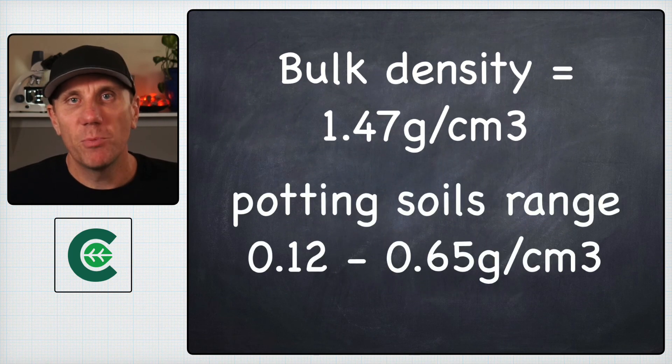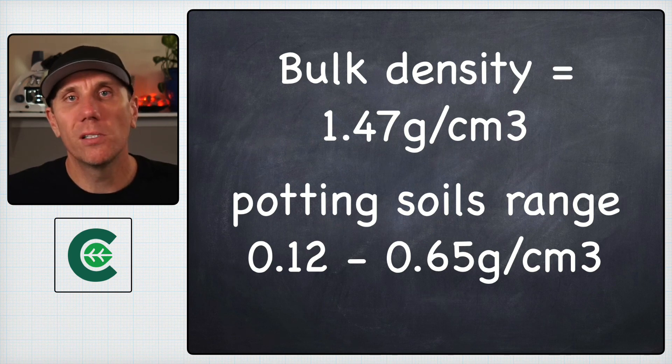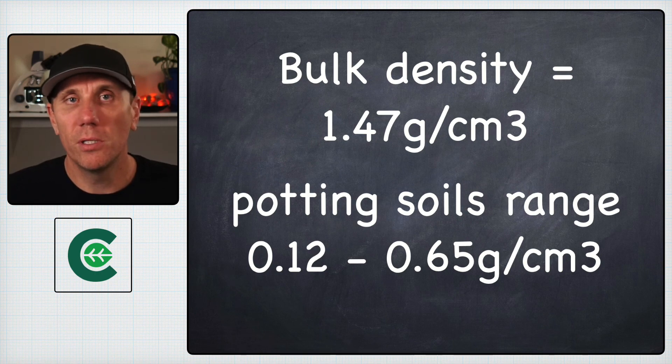If the average potting soils actually range somewhere from 0.12 to 0.65 and the lab is assuming that your data is based on a soil that has a weight of 1.47, this has two major consequences: one, your values are going to be remarkably skewed on the test, and two, your amendment applications are going to be completely incorrect.